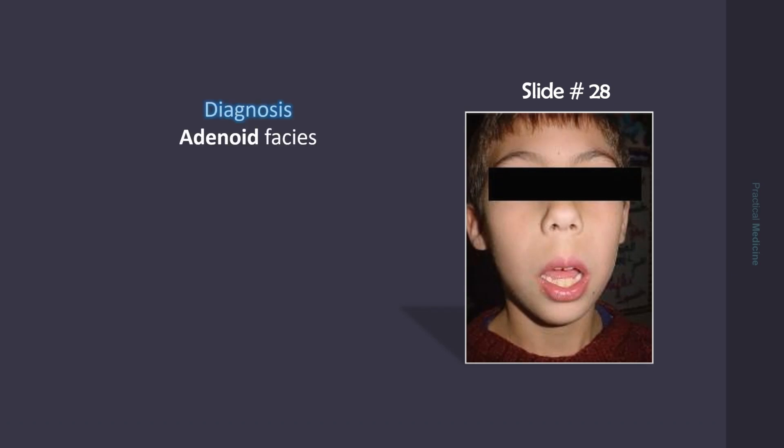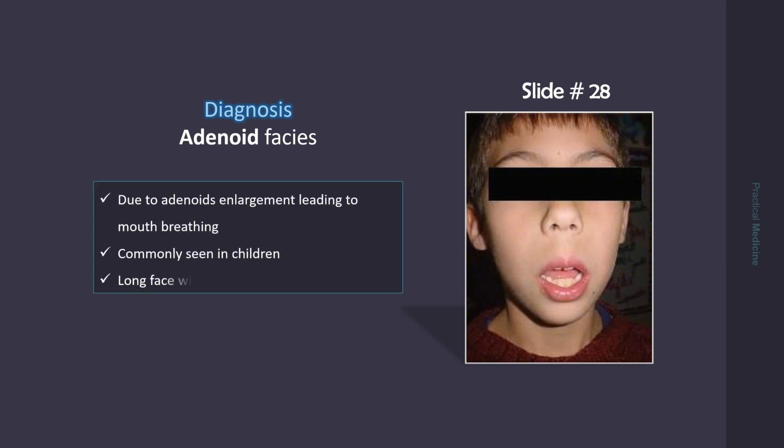This is called adenoid facies, and these features develop in children with adenoid gland swelling, which causes difficulty in nasal breathing, and as a result there is mouth breathing. The face appears long and the mouth is open.